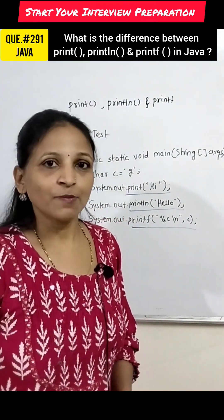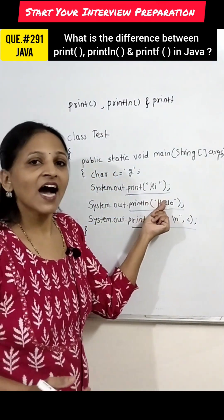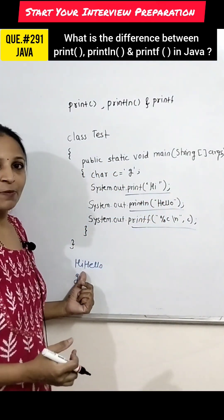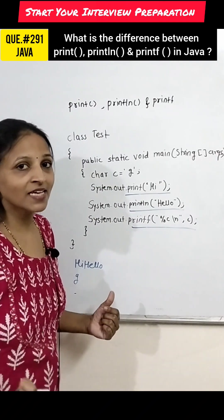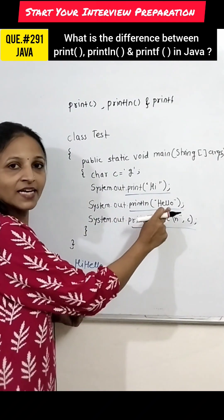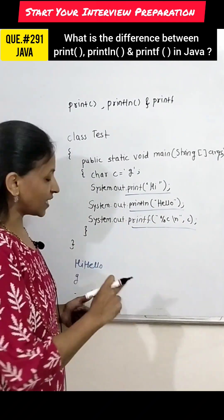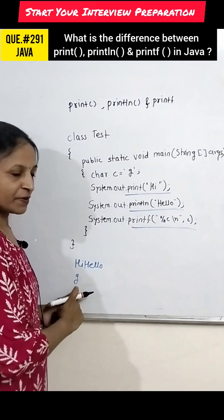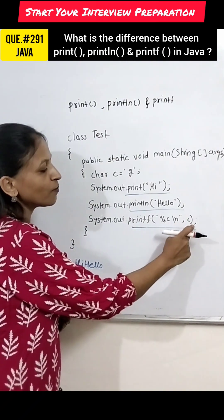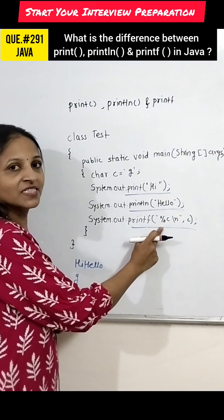For example, with the help of a print statement displaying 'hi', onto the output screen 'hi' will be displayed and the cursor remains on the same line. Again, System.out.println('hello') — here 'hello' will be displayed and because of println the cursor will be shifted to the new line.